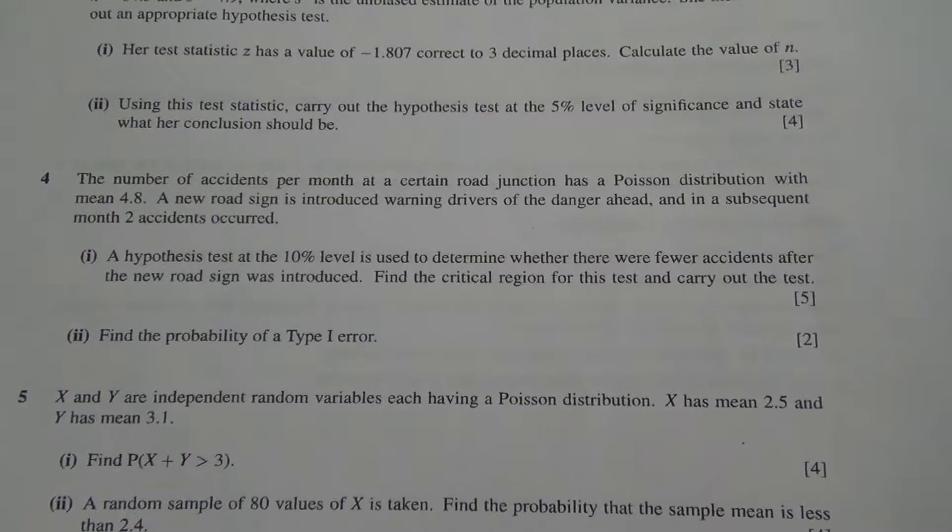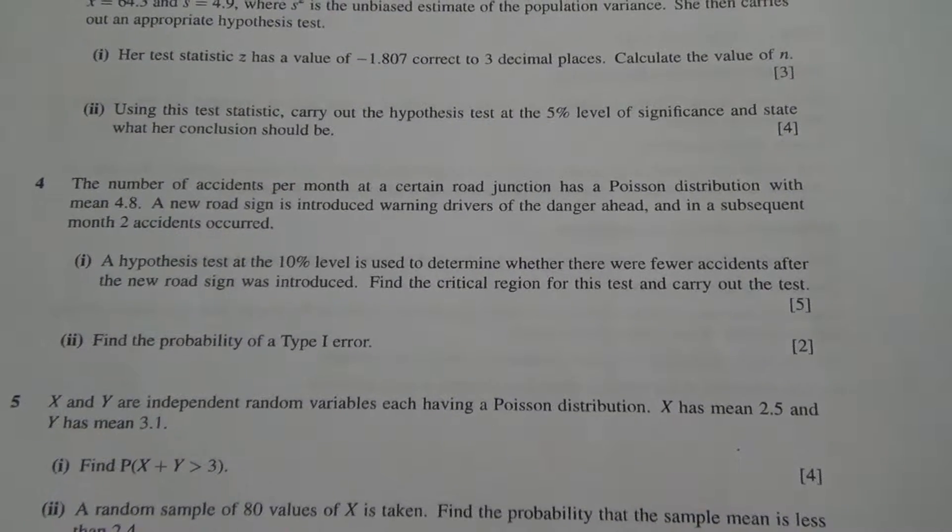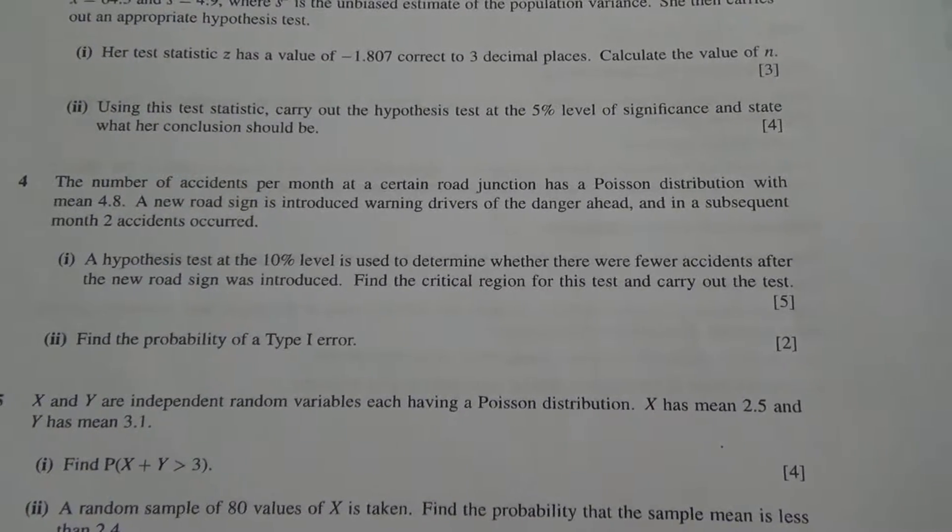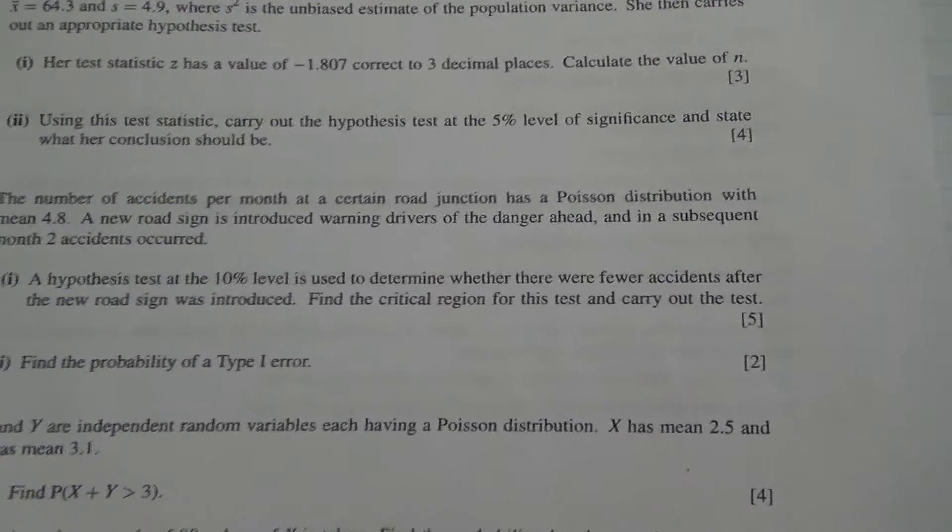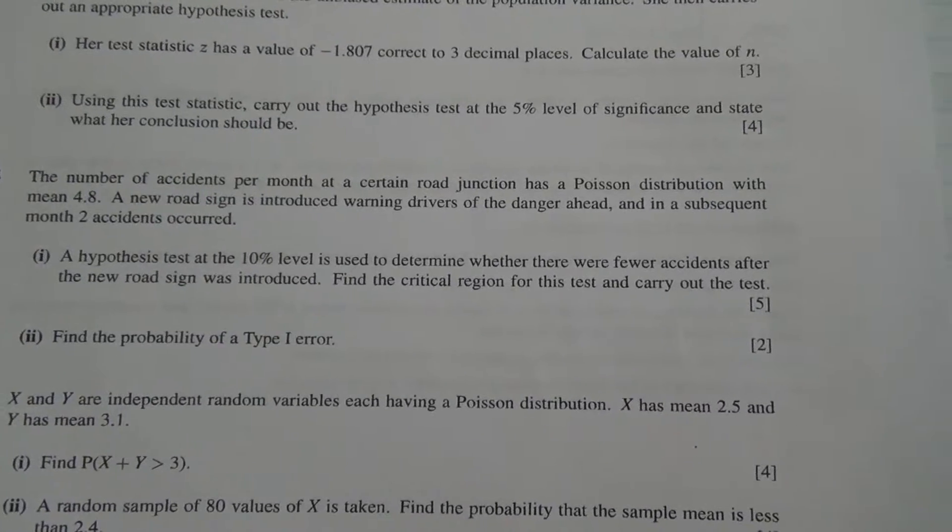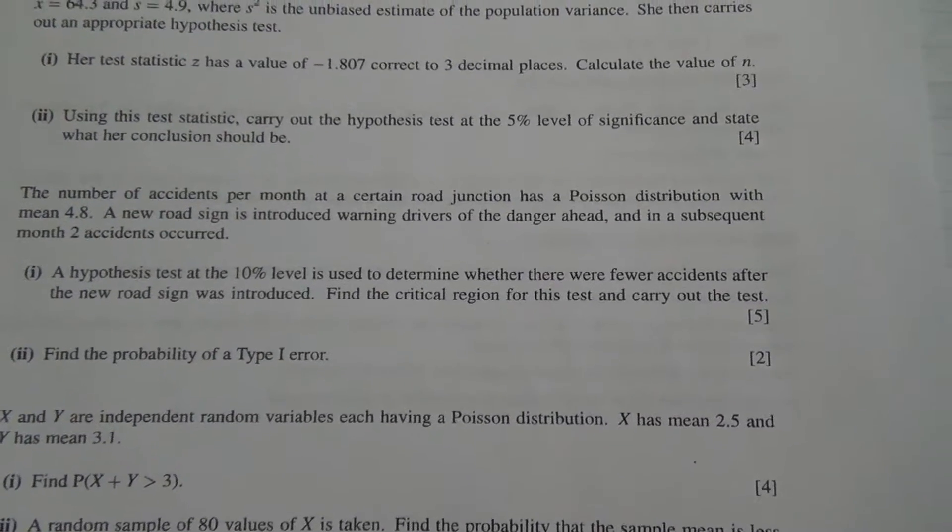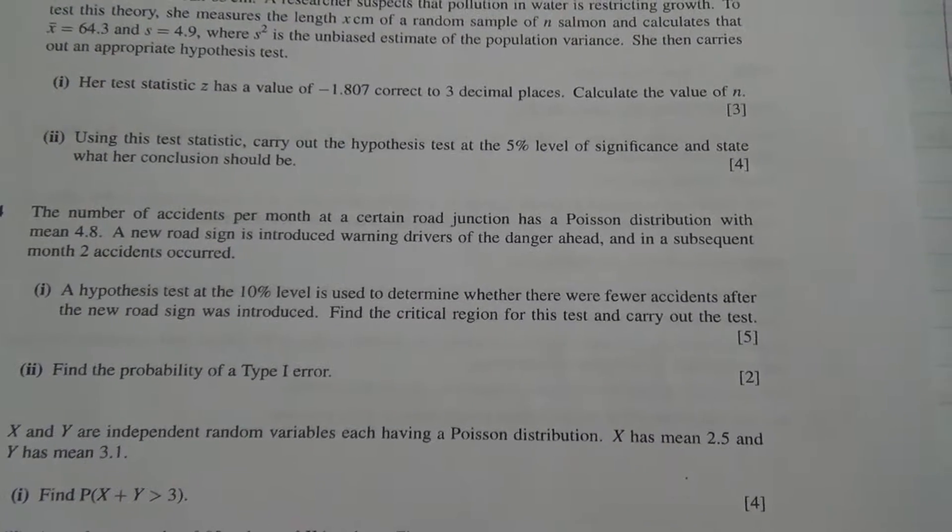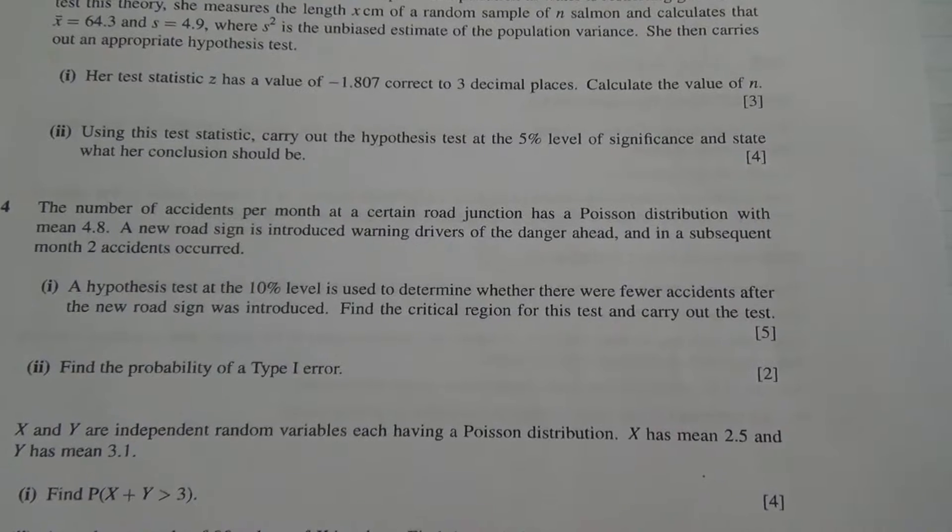Hi, question number 4, taken from October 2002, Advanced Level Maths HSC S2. The number of accidents per month at a certain road junction has a Poisson distribution with mean 4.8. A new road sign is introduced, warning drivers of the danger ahead, and in a subsequent month, two accidents occurred.